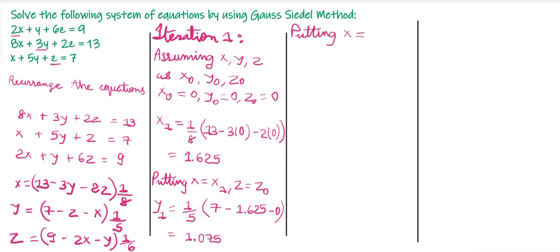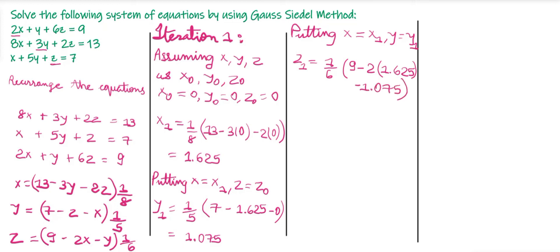Then substituting x = x1 = 1.625 and y = y1 = 1.075, we find z1 = (1/6)(9 - 2×1.625 - 1.075) = 0.7792.